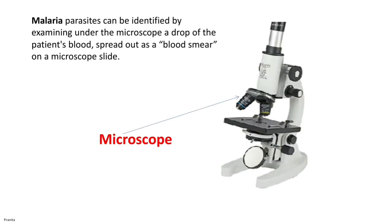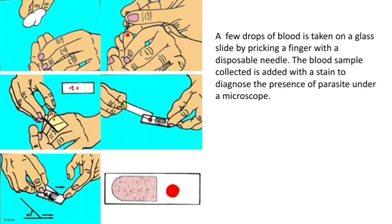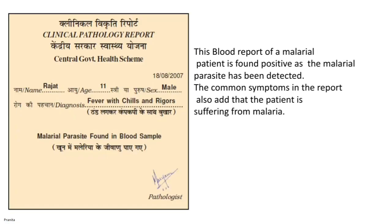As the malarial parasite is microscopic in nature, it can be identified by examining it under a microscope. A drop of the patient's blood is spread out as a blood smear on a microscope slide. A few drops of blood are taken from a finger prick with a disposable needle. The sample is stained to diagnose the presence of the parasite. If the malarial parasite is detected, the blood report will be positive, also showing symptoms like fever with chills and rigors.